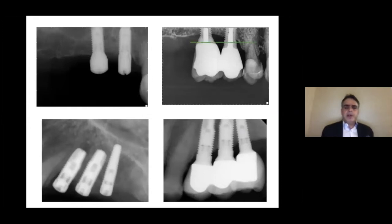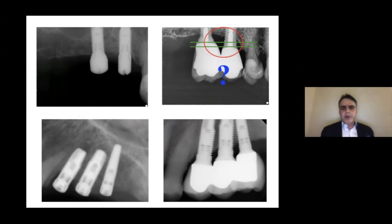For example, if you look at this radiograph, you can see the implants are relatively close. However, the platforms have a significant discrepancy. So we have to find out whether this vertical discrepancy has a detrimental effect on marginal bone loss or not.